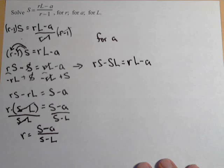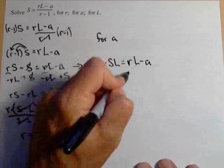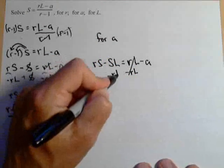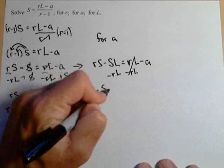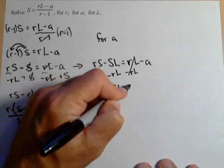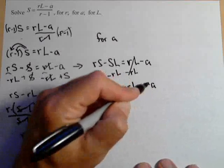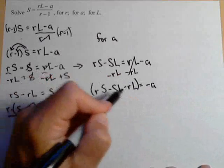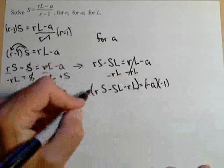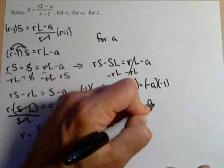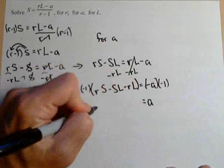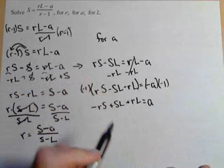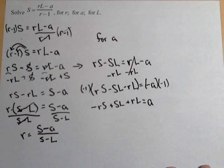So our goal is to solve for A. We need A on a side by itself. We've almost got it. So if we subtract RL from both sides, we get RS minus S minus RL equals negative A. We've almost got it. We just want that to be positive. So we're going to multiply both sides by negative one. And we get A equals negative RS plus S plus RL. And we've got this solved for A.